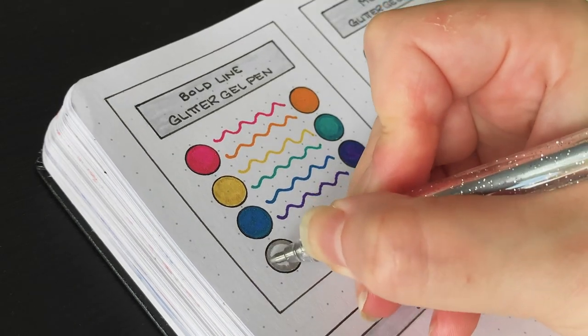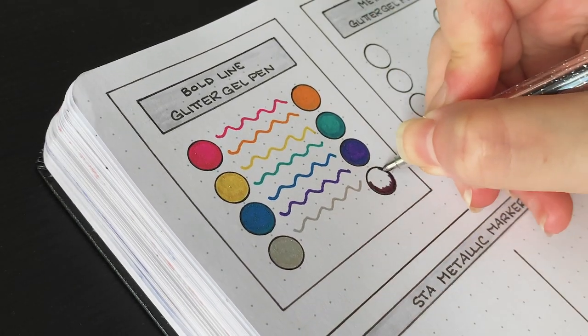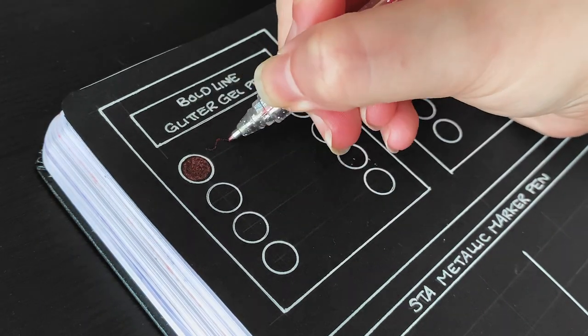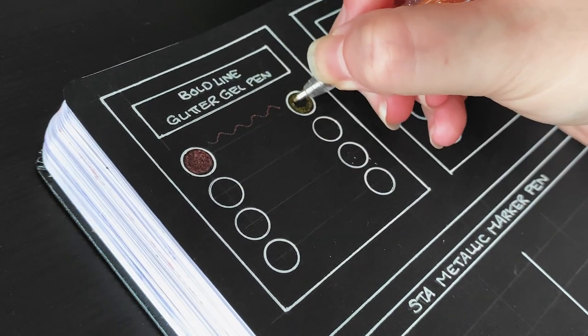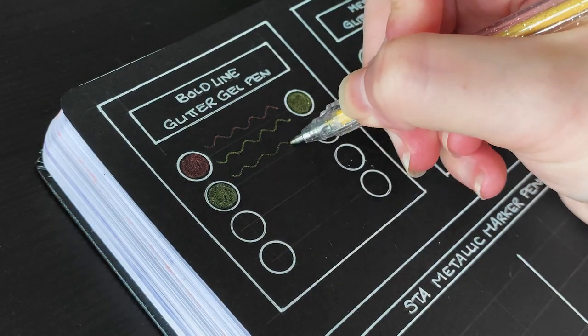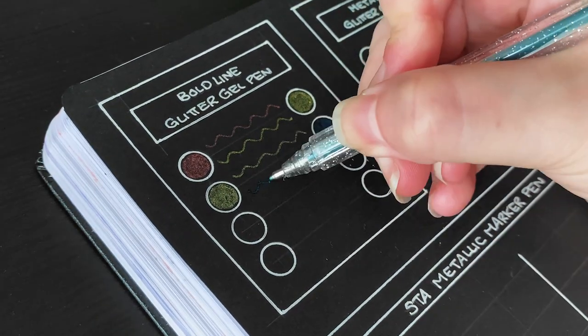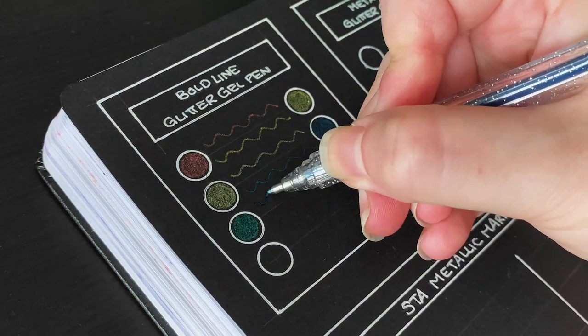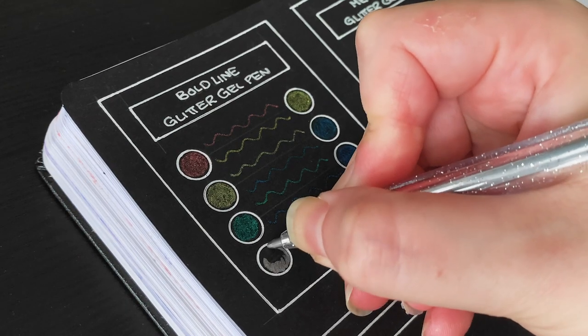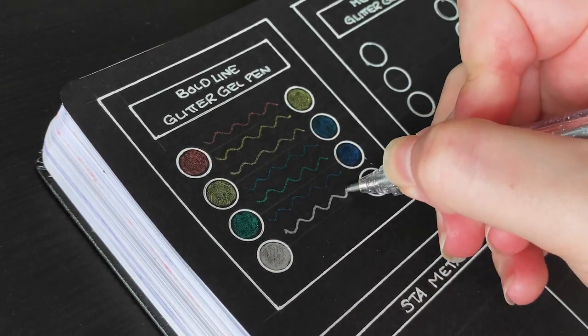We'll also be testing all of these supplies on black paper today. As you can see, they do show up on the black paper, but not super brightly. Since on the black paper we're really only seeing the glitter and not the ink, some of the colors show up very differently, like the green looks blue and the blue looks green. Overall, I really like these ones. I think they're really pretty and work exactly as you'd expect them to.